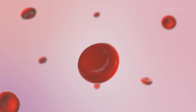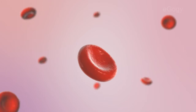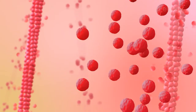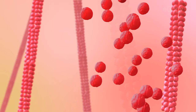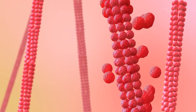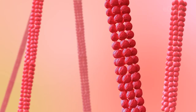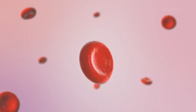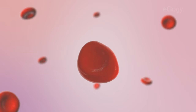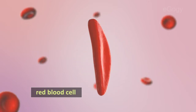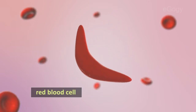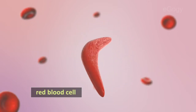Sickle cell anemia is an inherited disorder of the hemoglobin in blood. In sickle cell anemia, the red blood cells become rigid and sticky and are shaped like sickles.